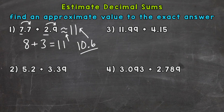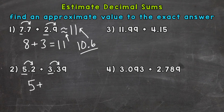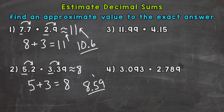On to number 2, where we have 5 and 2 tenths plus 3 and 39 hundredths. Let's round to the nearest whole number, so the ones place — we'll look next door. 5 and 2 tenths rounds to 5, plus 3 and 39 hundredths rounds to 3. So 5 plus 3 equals 8, and that's our estimate. The exact answer to number 2 is 8 and 59 hundredths — an approximate value to that exact answer.